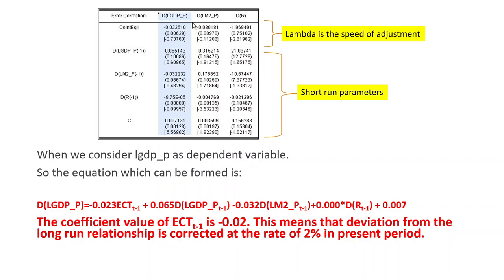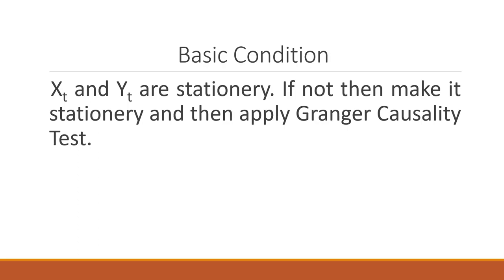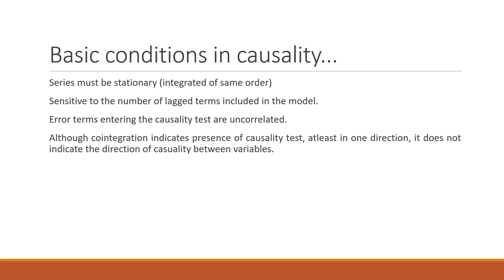Now we will have to carry out some causality tests. Suppose there are two variables Yt and Xt which may affect each other with distributed lags. The relationship can be captured with the help of VAR or restricted VAR. Yt causes Xt, Xt causes Yt — these are all directional feedback possibilities. The two variables may be independent of each other. So four conditions can be there. Both are affecting each other, or both are independent. It is necessary that both series are stationary if we want to apply the Granger causality test. Basic conditions: series must be stationary, integrated of the same order, very sensitive to the number of lag terms, and error terms in the causality test must be uncorrelated. Although co-integration indicates the presence of causality in at least one direction, it does not indicate the direction of causality.